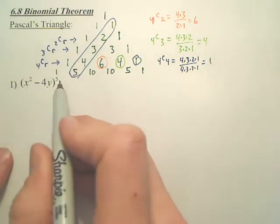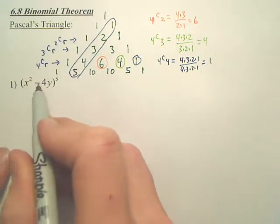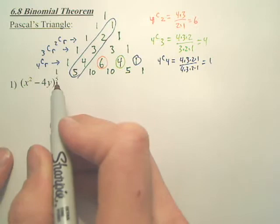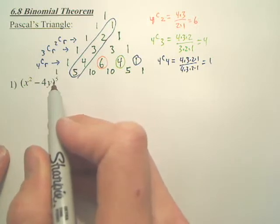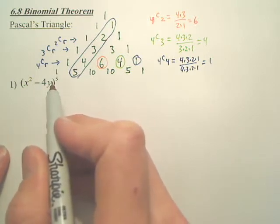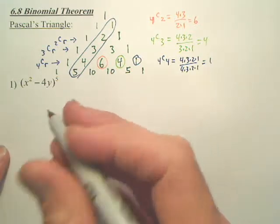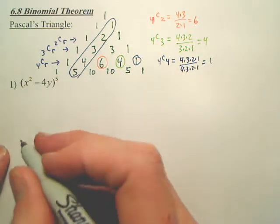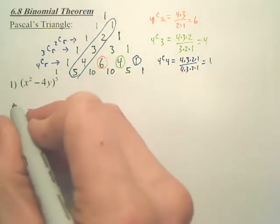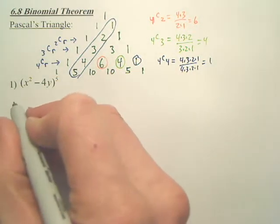Now look at this. I want to do this. I don't want to do a whole bunch of foiling. There's something called the binomial theorem. Just watch, and after I'm done, it'll kind of work out neatly.